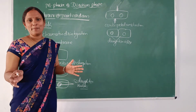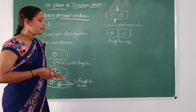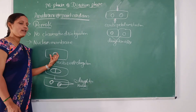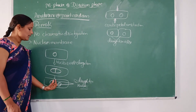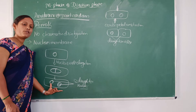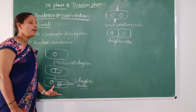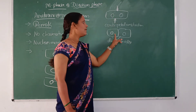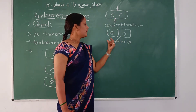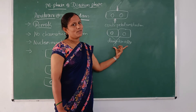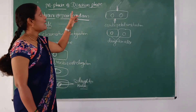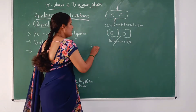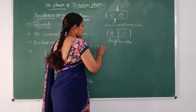In amitosis, there is no such speciality. Just the nucleus elongates, constriction results in the formation of two daughter nuclei, followed by centripetal constriction of the cell membrane which divides the cytoplasm, resulting in two daughter cells. Hence it is called direct cell division.